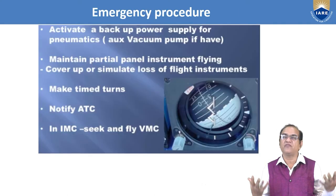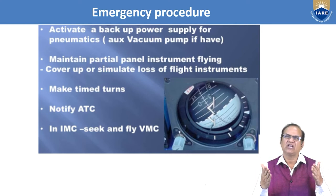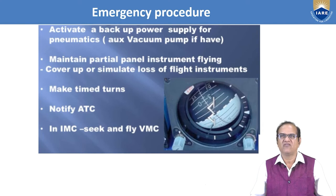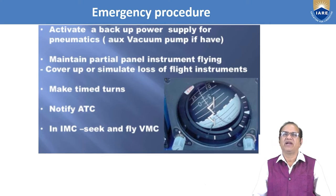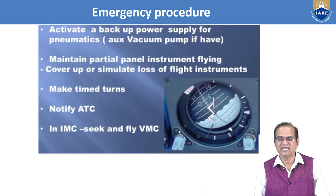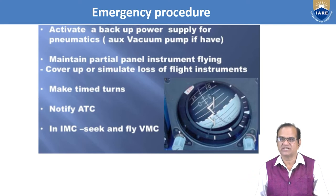Emergency procedures to follow if the system is not working: activate a backup power supply for pneumatics — use an auxiliary vacuum pump if available. Maintain partial panel instrument flying. Cover up or simulate loss of flight instruments. Make timed turns. Notify ATC that you are facing this problem in IMC conditions. Seek and fly VMC — fly visually if your instruments are not working properly.